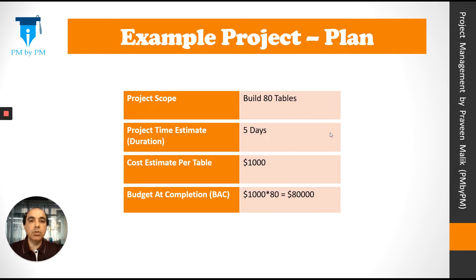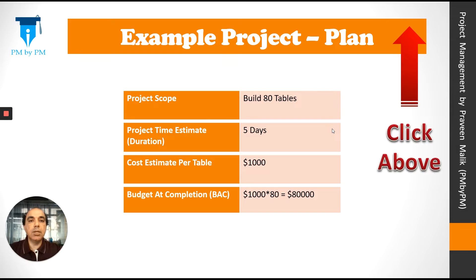Let's go back to our example project. The plan was to build 80 tables in 5 days. Our estimate was that it would take $1,000 to build one table. The total budget, or BAC, came out to be $80,000. You can click on the card above to see the details of this example project.